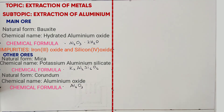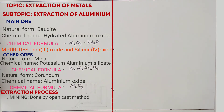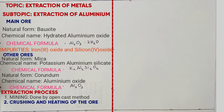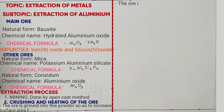The extraction process of aluminium begins from mining. Mining is done by open cast. After mining, step 2 is crushing and heating of the ore, whereby the ore is ground into fine powder so as to increase the rate of extraction of aluminium. After that the ore is heated so as to remove the water of crystallisation.